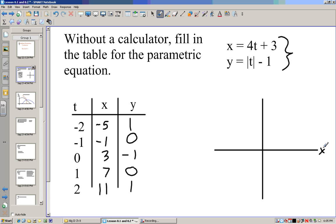To graph this, we don't graph the t at all. We just graph the x and y like normal. The x goes from negative 5 to 11. Let's scale these by 2. So 2, 4, 6, 8, 10, 12.